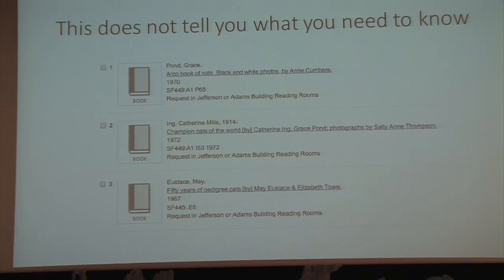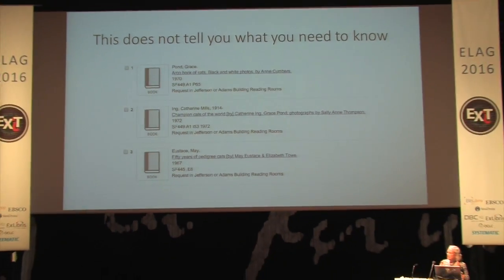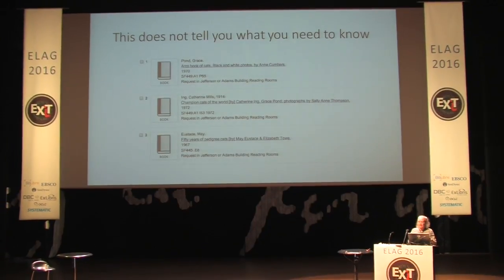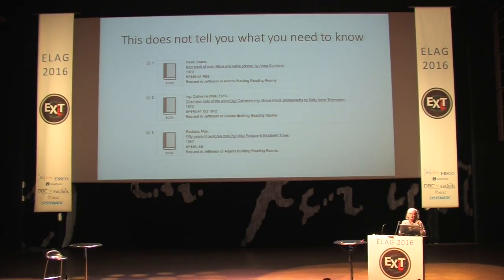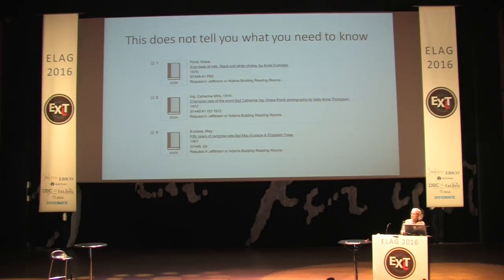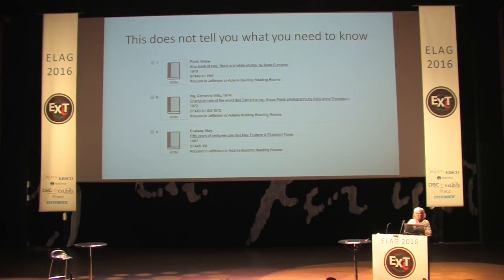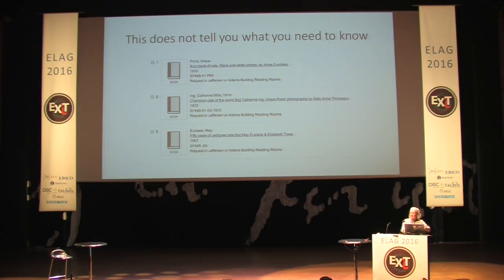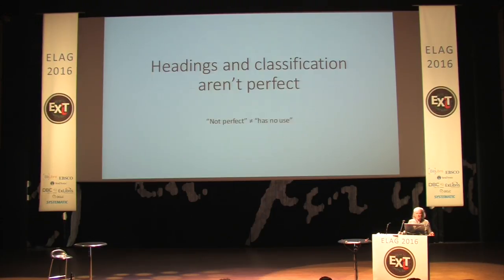Basically, giving people a list of retrieved items in some order is not telling them what they need to know. It's just so clear that this doesn't work, and what's amazing to me is that we've continued to do this. I first destroyed the library catalog in 1982 by moving to a database and not finding a way to bring along the context for the user. And yet here we are, we're still doing this.